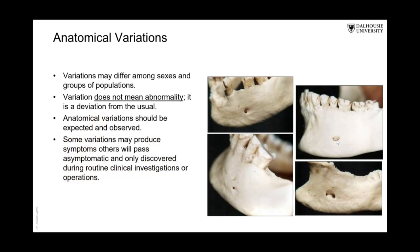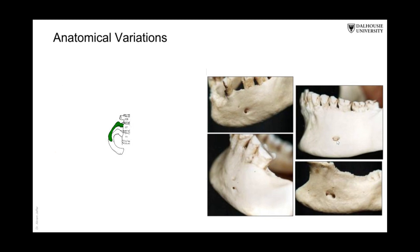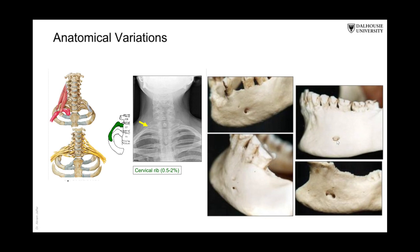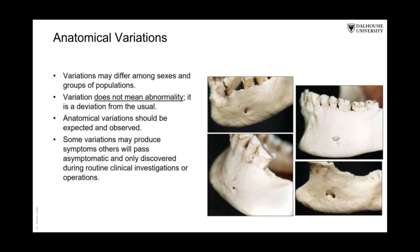These anatomical variations should be kept in mind because sometimes they can produce symptoms. For example, some people have an extra rib in the cervical region called a cervical rib. This rib might remain dormant and silent for the entire life, only discovered during a routine X-ray. But sometimes it produces signs and symptoms due to compression on nerves and vessels. During surgery, you will be confronted with many of these variations, and if they are not expected, they might result in complications during and after surgery.